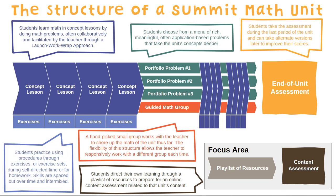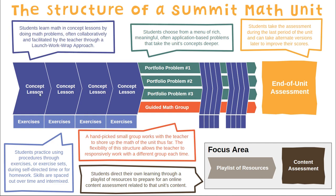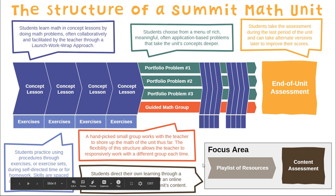Students learn math concepts in a lesson using a problem-based approach, and at the end of each lesson they engage in cooldowns, which are used as formative assessments to show how they're doing towards the end-of-unit assessment — which is a final grade accounting for about 70% of their grade. About 10% of their grade also comes from portfolio problems, where they choose a problem to apply concepts, usually midway through and again near the end of the unit. This is paired with exercise sets for home practice, pull-out guided math groups to help struggling students, and focus area work to review content at a different level.